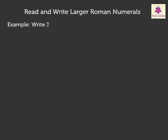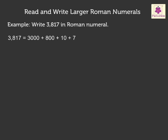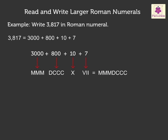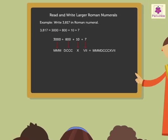Now let us look at another example: Write 3817 in Roman numerals. We first write 3817 in expanded notation as 3000 plus 800 plus 10 plus 7. Writing the Roman numeral values of each: 3000 as MMM, 800 as DCCC, 10 as X, and 7 as VII. So 3817 in Roman numerals is MMMDCCCXVII. It was so much fun to learn Roman numerals!